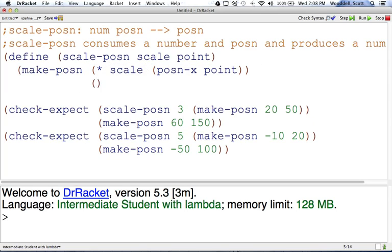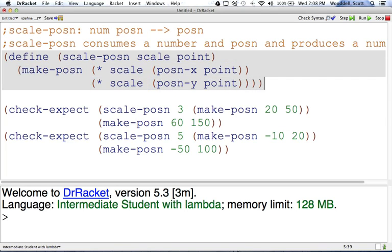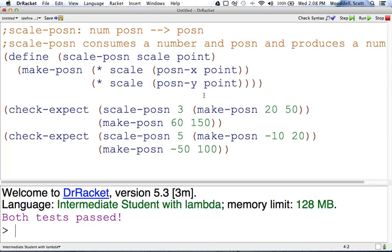Our y-coordinate is the same thing, except we're going to multiply it by our y-coordinate of point. Close our MakePosition. We close our Define. We are good to go. And let's run. And both of the tests passed here.